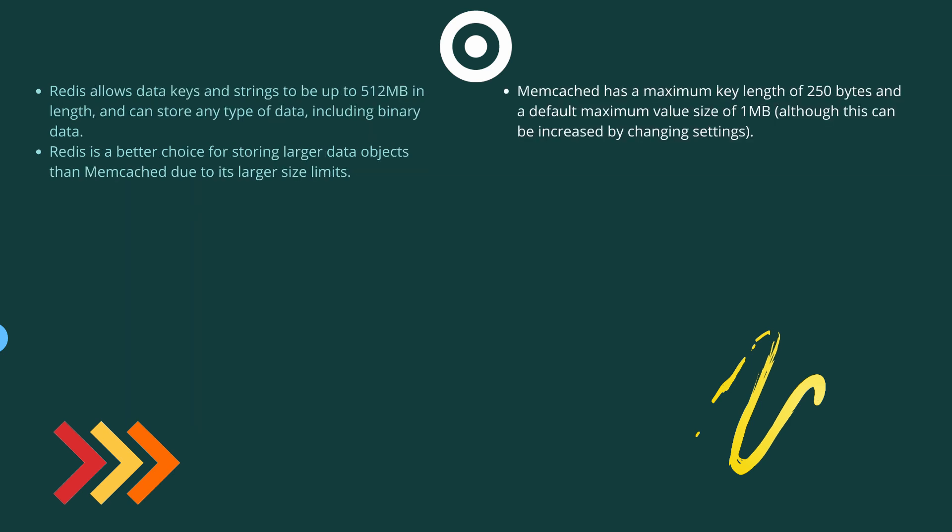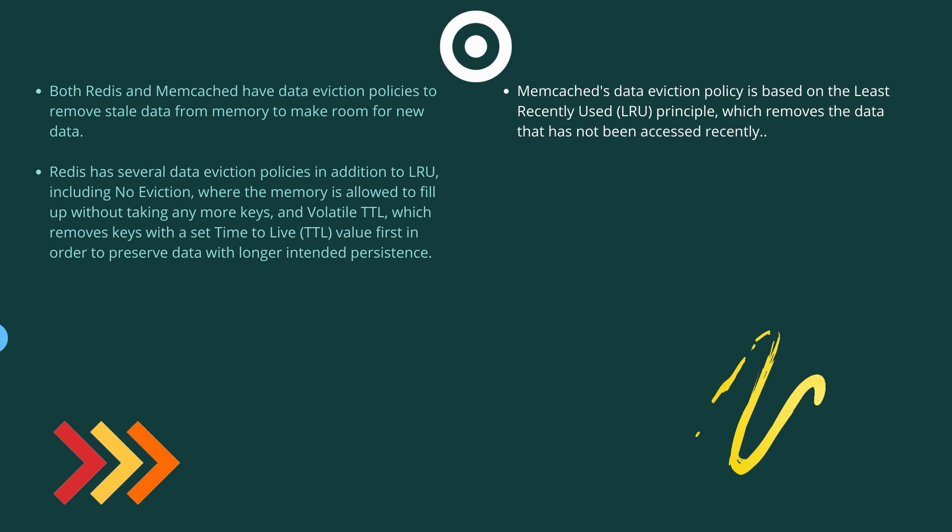Redis allows data keys and strings to be up to 512 MB in length and can store any type of data including binary data. Memcache has a maximum key length of 250 bytes and a default maximum value size of 1 MB, although this can be increased by changing settings. Hence Redis is a better choice for storing larger data objects than Memcache due to its larger size limits.